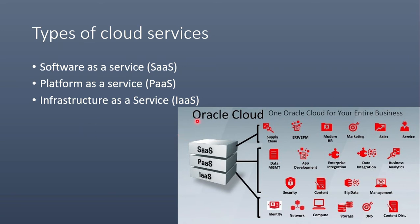Here I have taken an example of Oracle Cloud. The meanings are straightforward. When you consider Infrastructure as a Service, it means that your cloud provider is providing you the infrastructure for your application, such as identity, network, computing, storage, DNS, content, and all that.